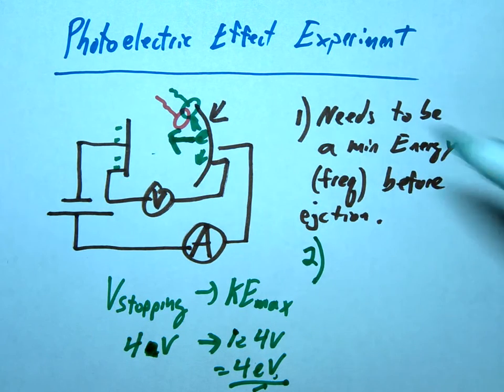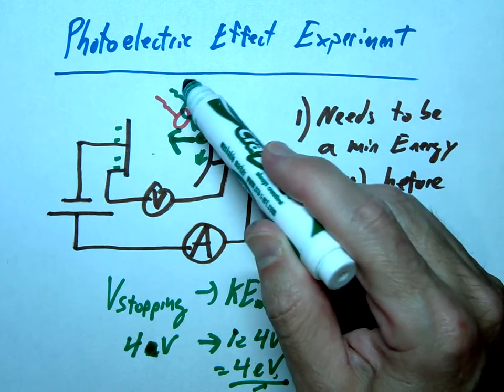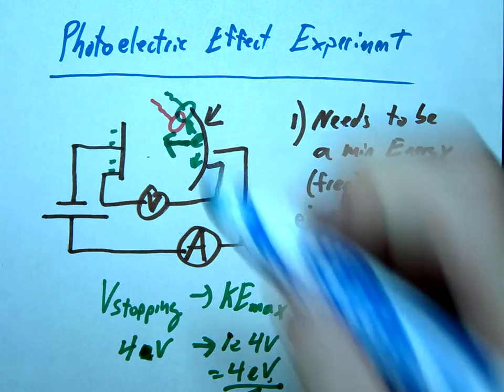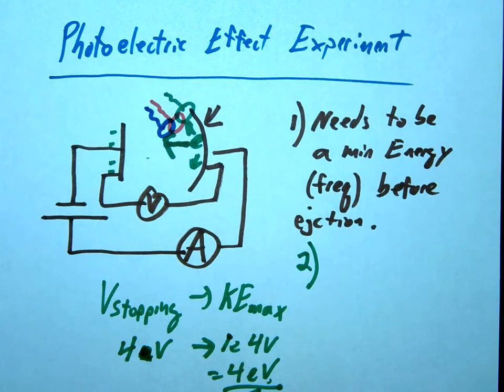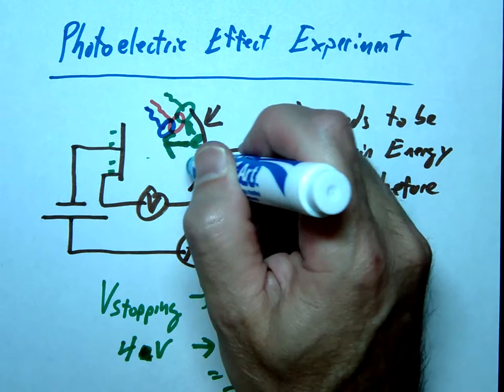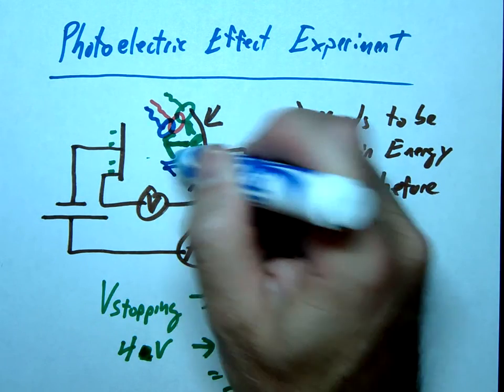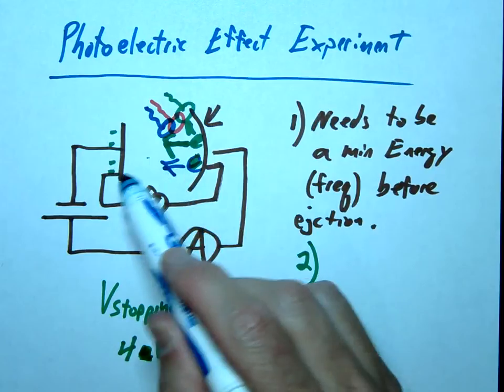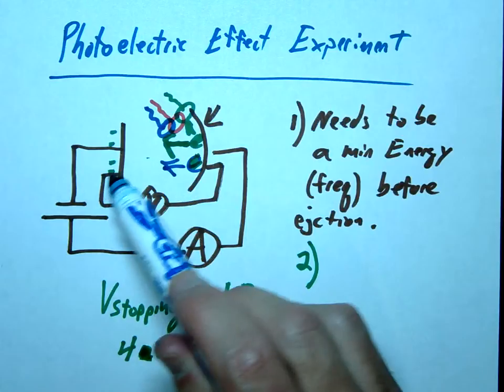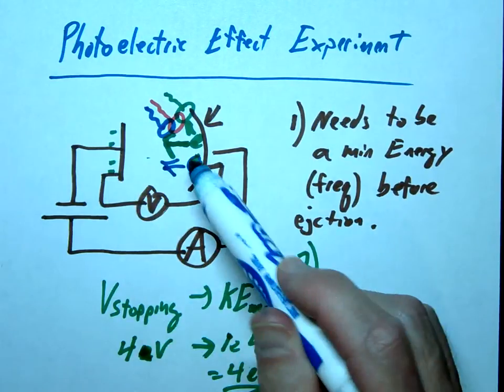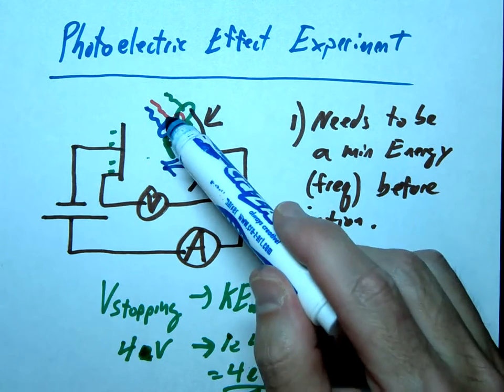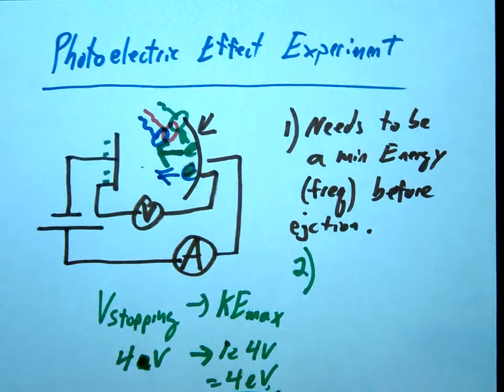So number 2, what we would do is we would therefore increase the frequency. Let's say instead of green, let's say we sent in some blue. So this is going to be a higher frequency, therefore a higher energy. And then it's going to eject these electrons. Again, we're going to look for the ones that are coming straight across like this. So that electron moving across, the stopping voltage is going to have to go up. Before we can stop it from moving, we're going to have to increase that because it has more kinetic energy. And this is just conservation of energy. This comes in with more energy. That's going to be ejected with more energy as well.